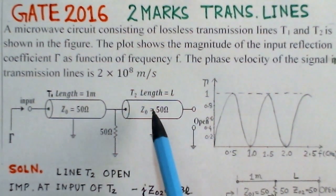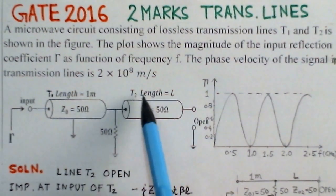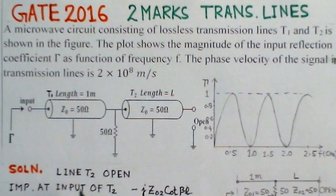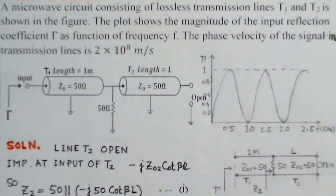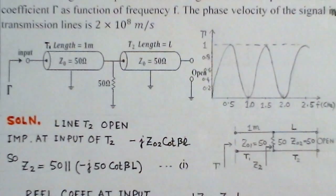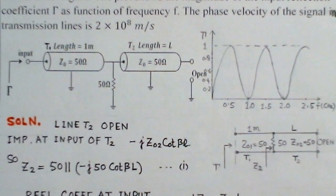What we have to determine here is the length of this unknown section of transmission line. Now we look into the solution. We have redrawn this transmission line diagram in a simpler form.